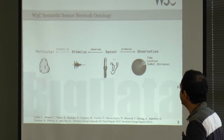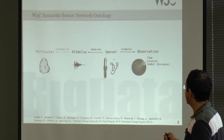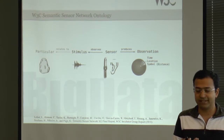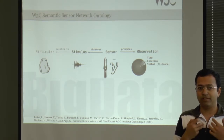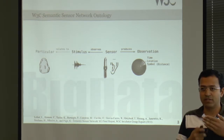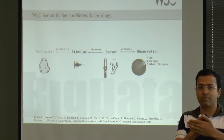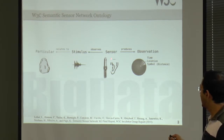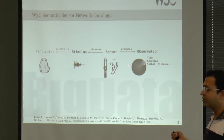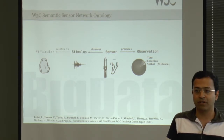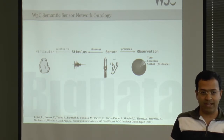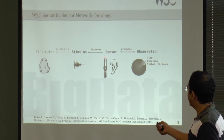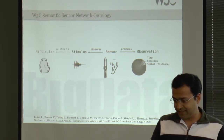Semantic sensor network ontology is based on the stimulus-sensor-observation concepts. Stimulus — you can think about it like this: I'm talking, but whatever comes out of my mouth is basically vibrations. There is a stimulus that causes those vibrations, and your ears are sensors. Sensors usually observe the stimulus and translate those to observations. Another example is temperature: as temperature increases, air molecules start vibrating, the stimulus is vibration, and the sensor translates that vibration to a signal, which is the observation. SSN is based on this.